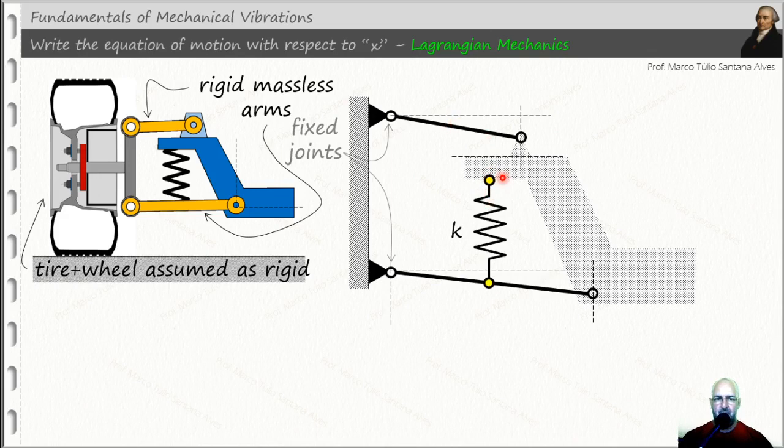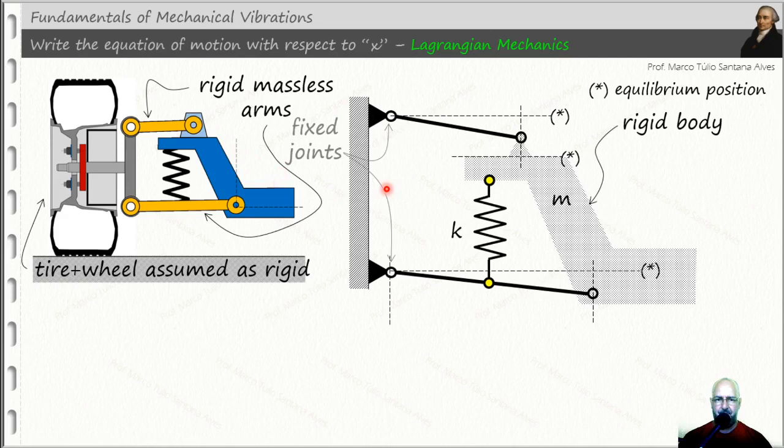And now here we have the spring attached to the car, and this star here means equilibrium position. We have the equilibrium position here, here and over here. The mass M of the rigid body, we are assuming this blue part as a rigid body.